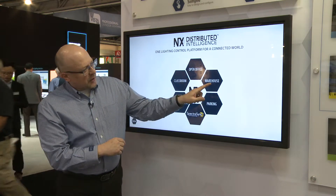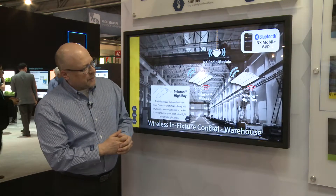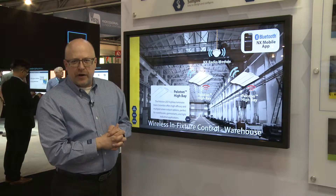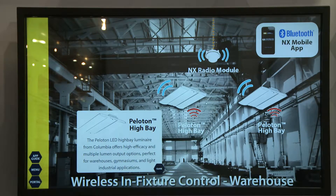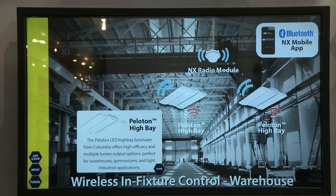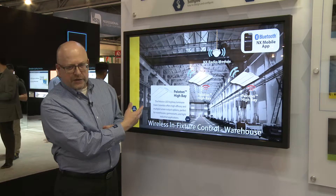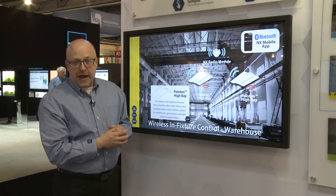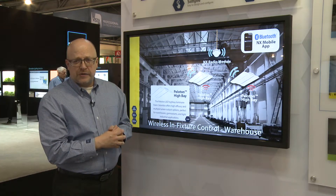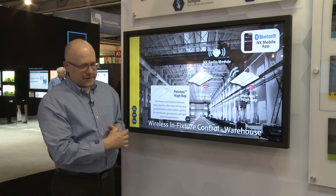In other environments like a warehouse, we work with combinations of our other fixtures — in this case the Columbia Peloton fixture — again with an embedded sensor doing occupancy and daylight dimming. The radio is used to connect to the overall system and could include wall stations, but more importantly perhaps make use of the 99 schedules that are built into every NX device.